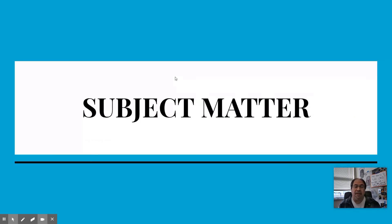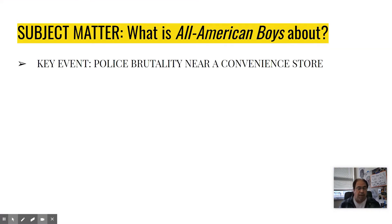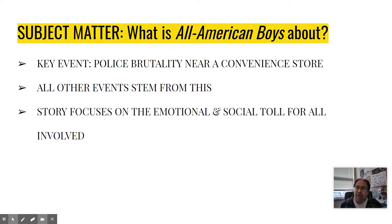In terms of subject matter, the key event central to All-American Boys is an incident of police brutality that occurs outside of a convenience store on an early Friday evening. The incident takes place very early in the story, and all later plot events revolve around and stem from that episode. The main subject matter is the way various people in the town — the victim, his family, the police officer's family, people in the boys' school, and the media — all react and try to come to grips with the larger issues of race and justice.